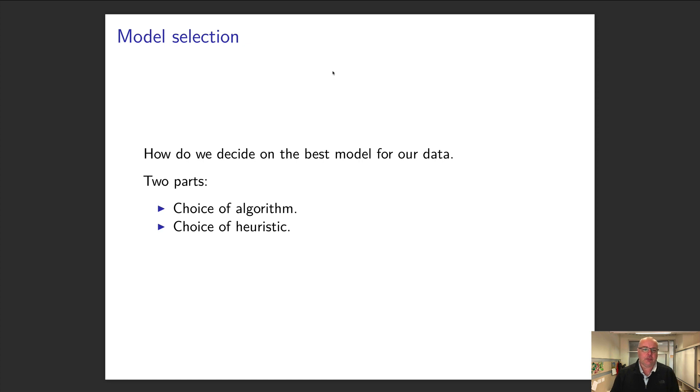We're going to consider linear models at this point, and we've got two ways to choose our best model. We can choose the algorithm we're going to use to choose the best model, and also we can choose a heuristic. By heuristic, I mean how I'm going to judge how good a model is. This lecture will be about algorithms; the next one will be about heuristics.